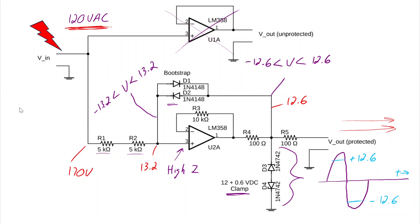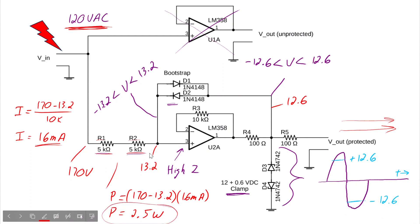To answer that question, we better calculate the current. So the current is equal to 170 minus 13.2 divided by 10k, which is approximately 16 milliamps, which isn't excessive. However, we better look at the survivability of R1 and R2. Together, there will be a power dissipation of 170 minus 13.2, all multiplied by that 16 milliamps, which is a power dissipation of 2.5 watts. Keep in mind, that's a peak power. At any rate, it's certainly not trivial, and you'll have to select these two resistors to be high-power devices. But that's not too difficult to do, and it's not too costly.